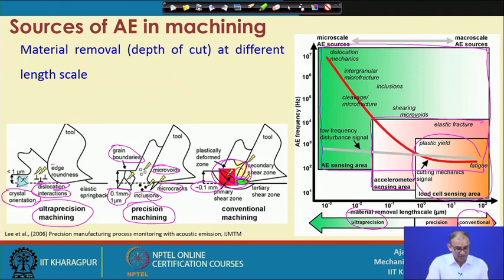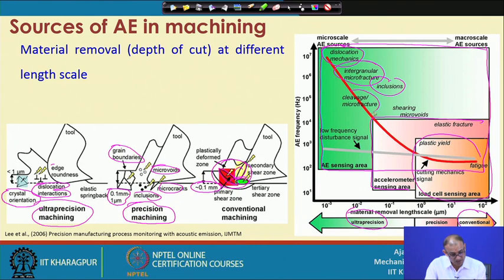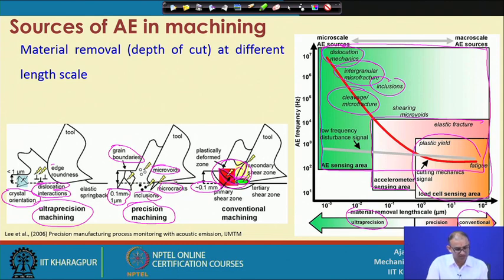All disturbances at very small scales — dislocation mechanics, micro-fracture, inclusions, cleavage — can be captured by acoustic emission. From a micro-mechanics point of view, acoustic emission is a very important tool to measure all this behavior at micro scale. That is why acoustic emission is a very important tool for understanding machining at the micro scale.